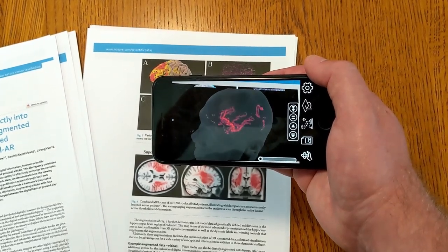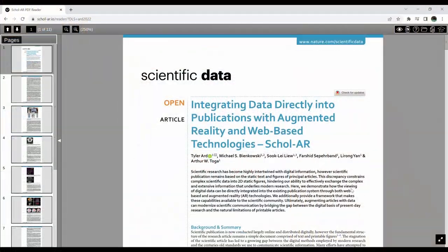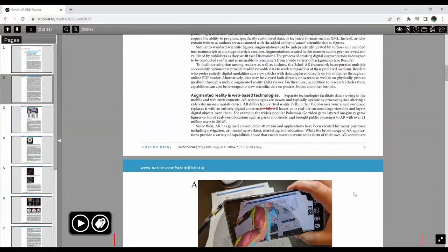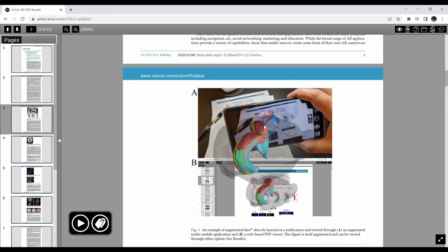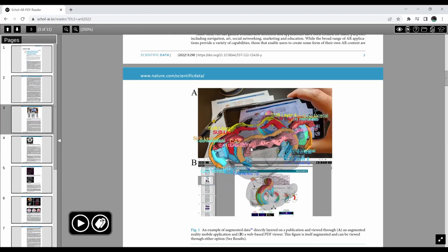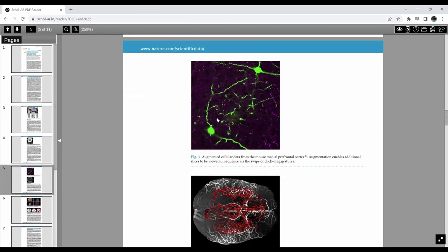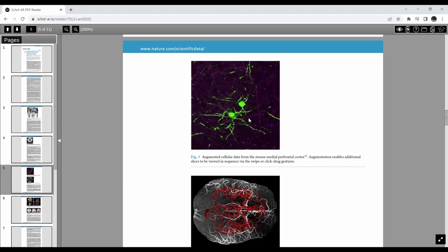Scholar lets readers seamlessly access these digital augmentations through both augmented reality and browser interfaces. With our approach, standard documents like PDFs are converted into fully interactive digital media that can include multiple types of data, such as video, image stacks, 3D models, MRI volumes, and more.